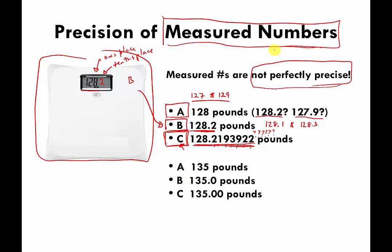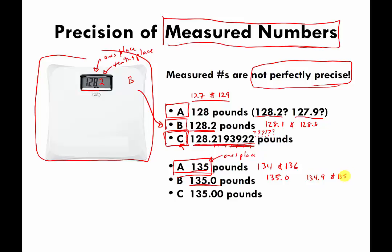This is true even if you have zeros at the end. Say Scale A measures someone else at 135 pounds — it only measures to the ones place, so it's saying more than 134 and less than 136. Scale B might give 135.0, and in math class they tell you 135 and 135.0 are the same thing — but when making a measurement, that's not necessarily true. With 135.0, all you really know is the weight is more than 134.9 and less than 135.1.